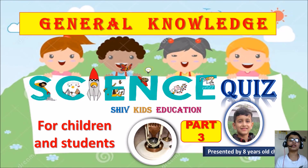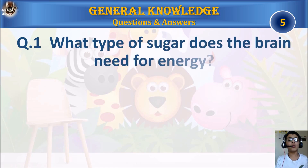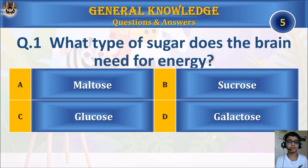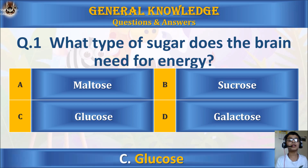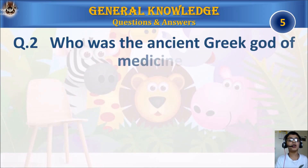Hey guys, thanks for clicking on this video and welcome to my channel Shift Kids Education. Today we're going to learn science quiz part 3. Question 1: What type of sugar does the brain need for energy? A: Maltose, B: Sucrose, C: Glucose, or D: Galactose. Your time starts. The answer is C: Glucose.